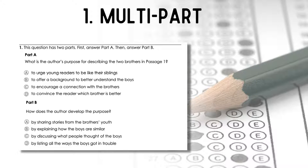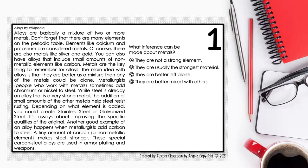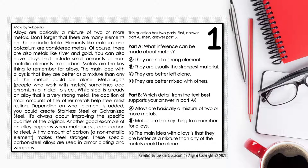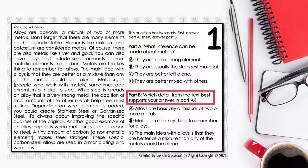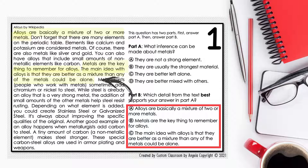The first item type is multi-part, which is a question with two parts: Part A and Part B. In the past, students would see a single-part question like this example: 'What inference can be made about metals?' Now the question has two parts — Part A still asks the same question, but Part B asks which detail from the text best supports your answer in Part A. The answer choices will then be direct quotes from the text.